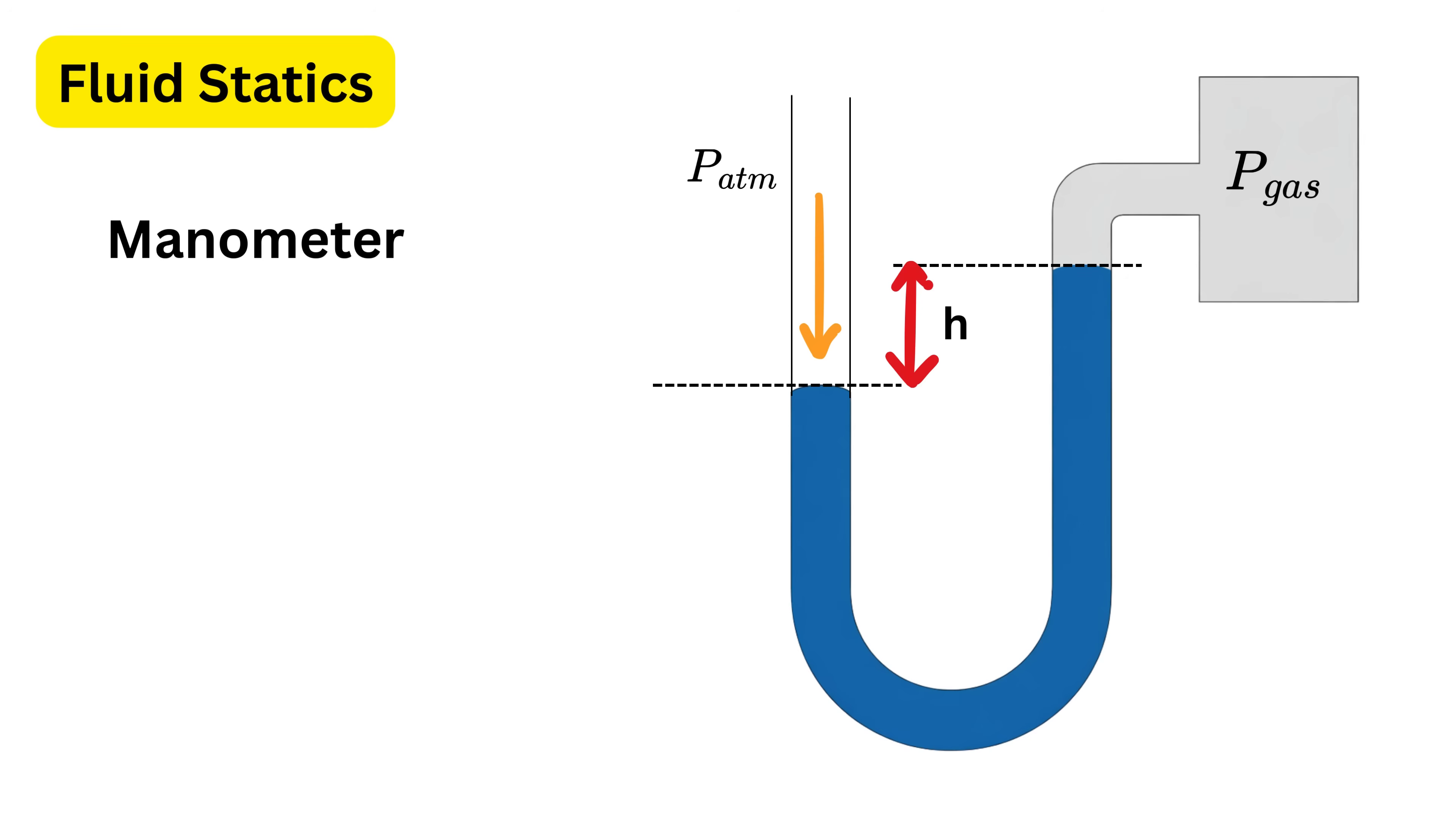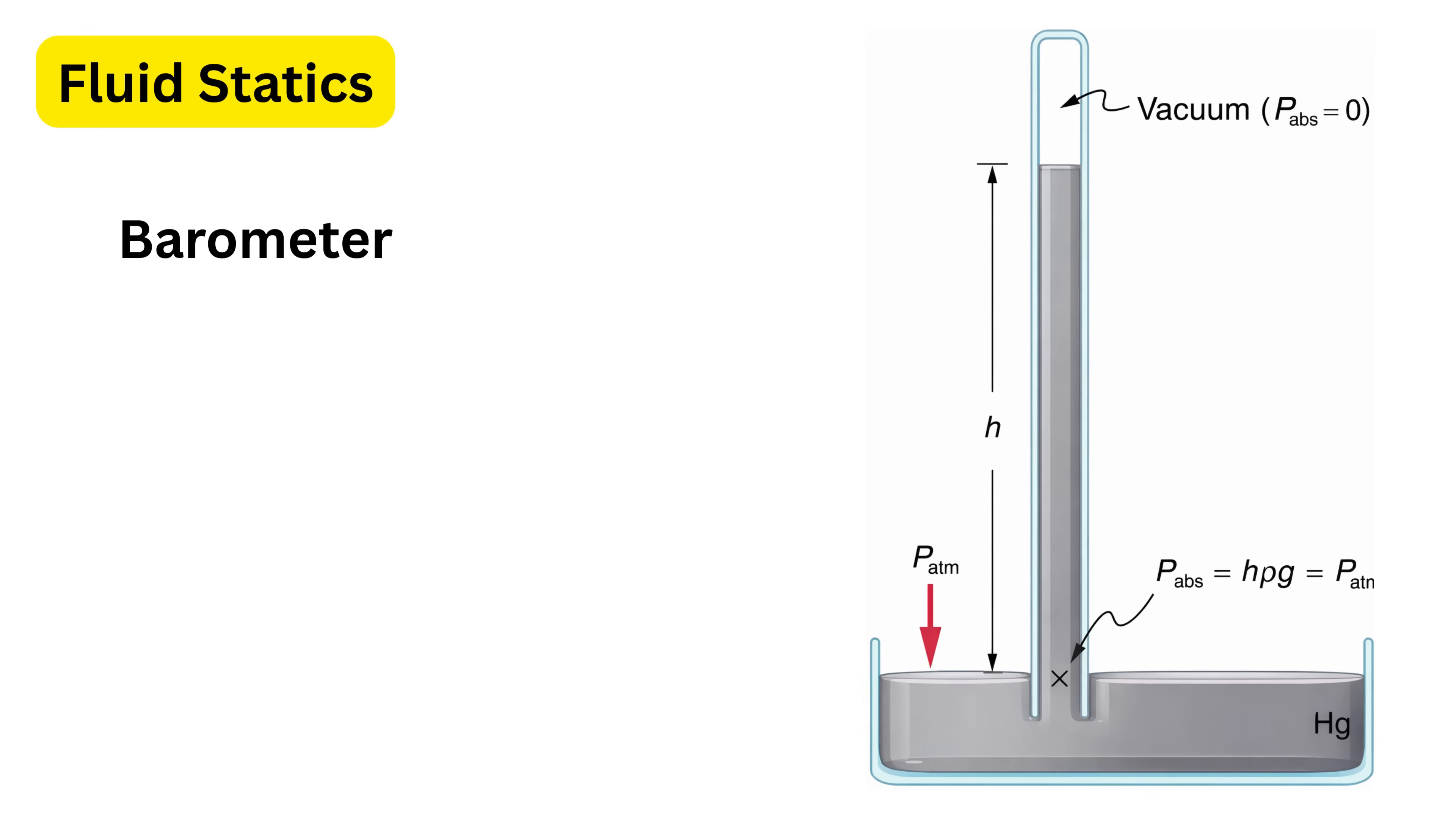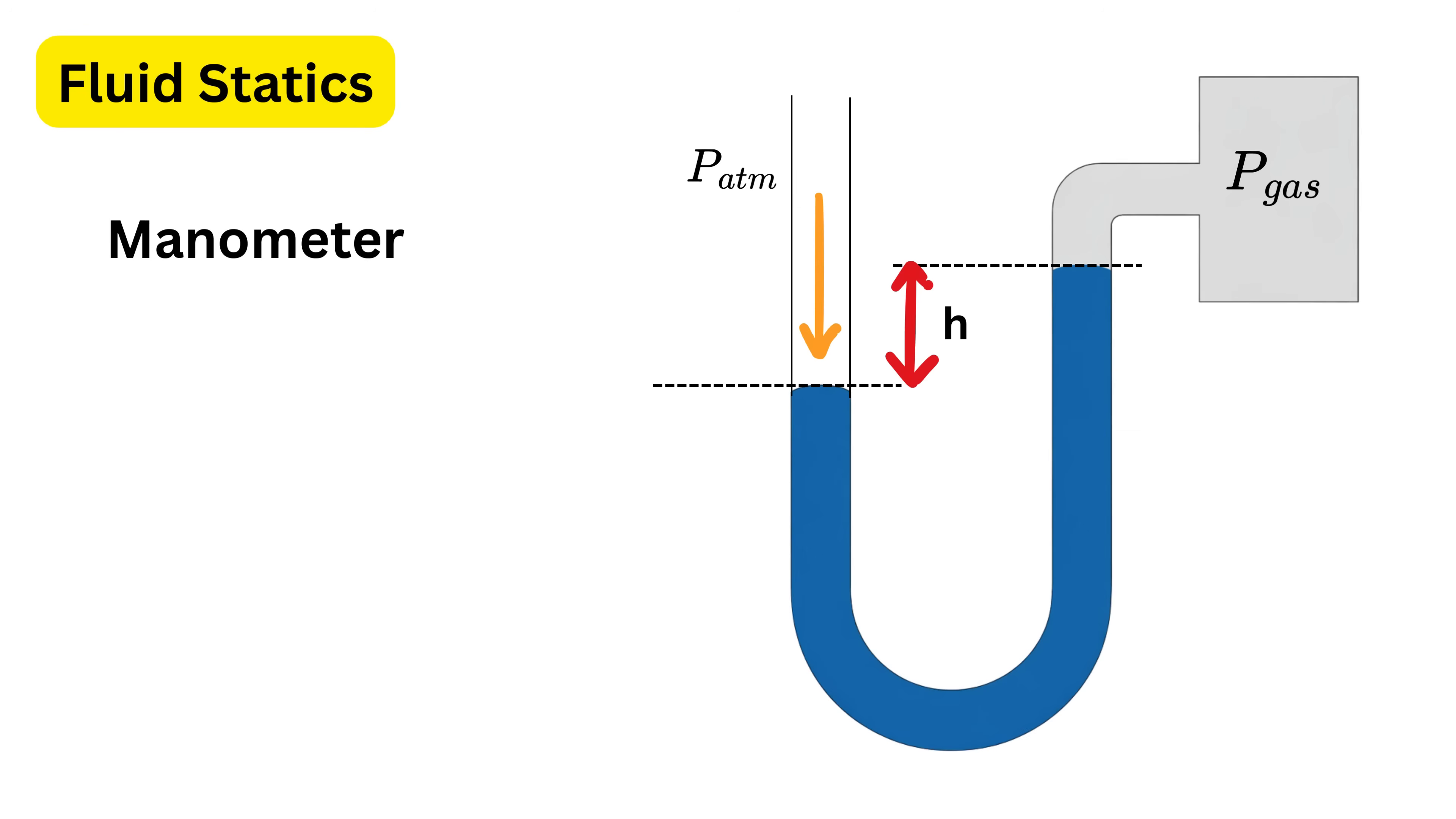To measure pressure, we use devices like manometers and barometers. A manometer uses a liquid column to compare pressures. The difference in heights of the liquid columns tells us the pressure difference. Manometers primarily use mercury for high pressure measurements due to its high density, but water and alcohol are common for lower pressures because they offer greater sensitivity and visibility.